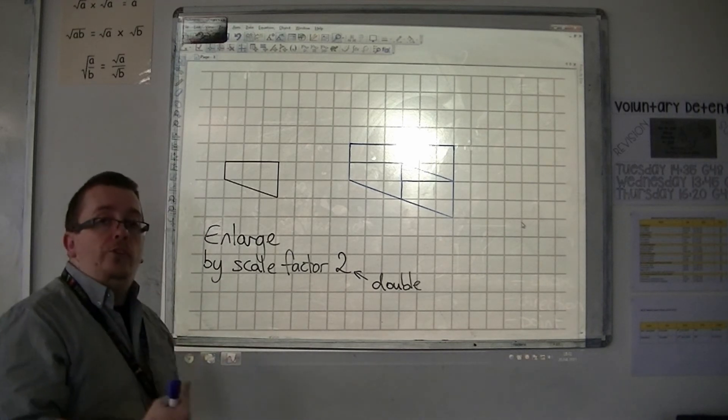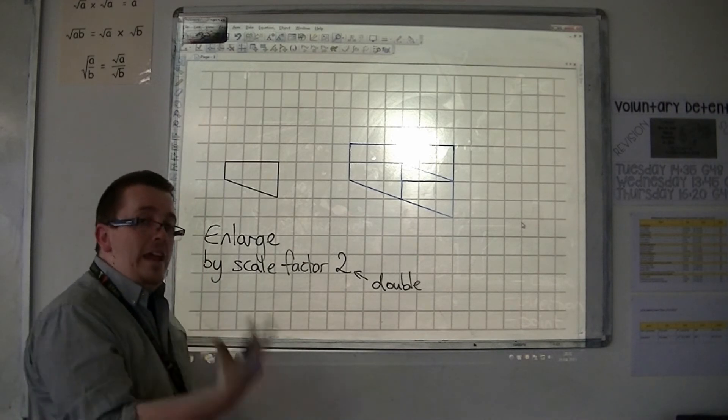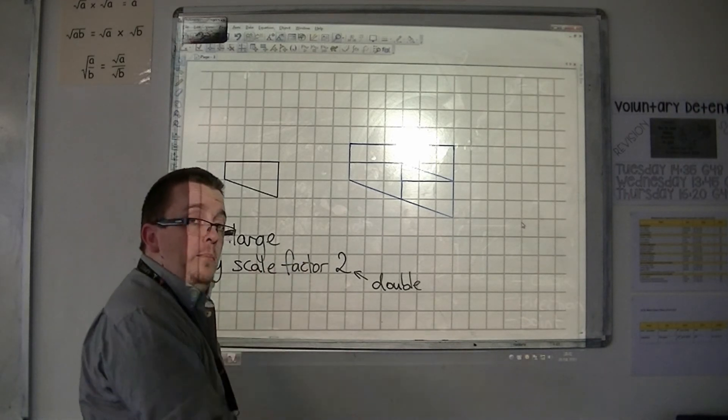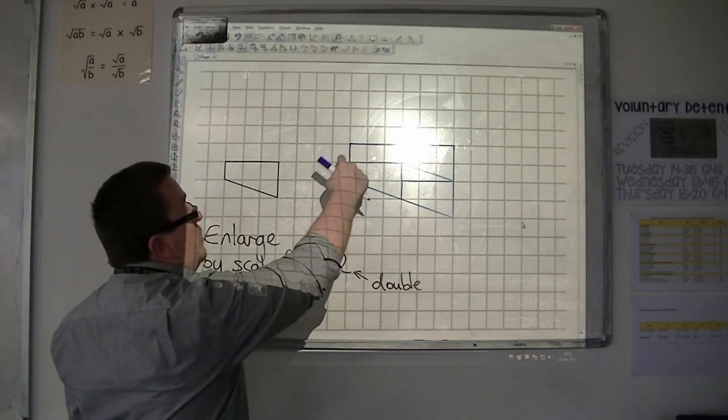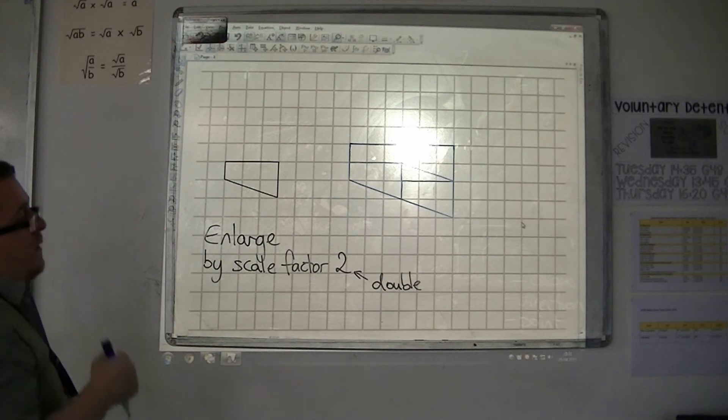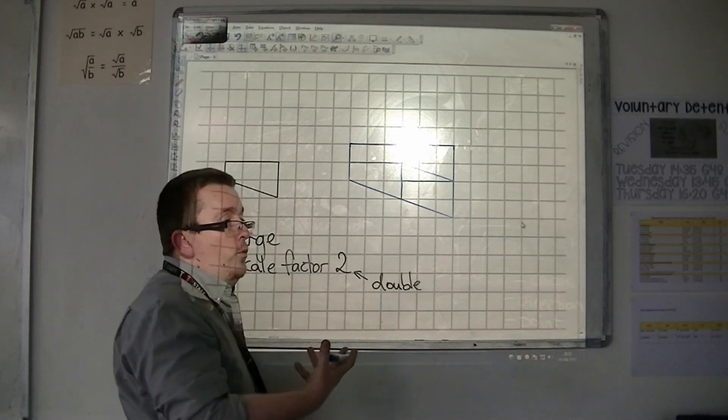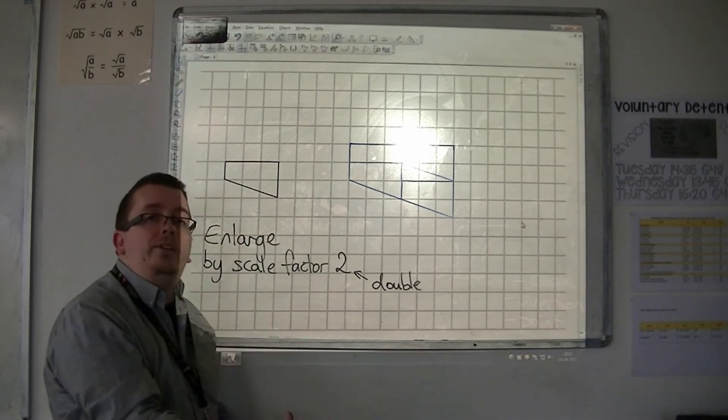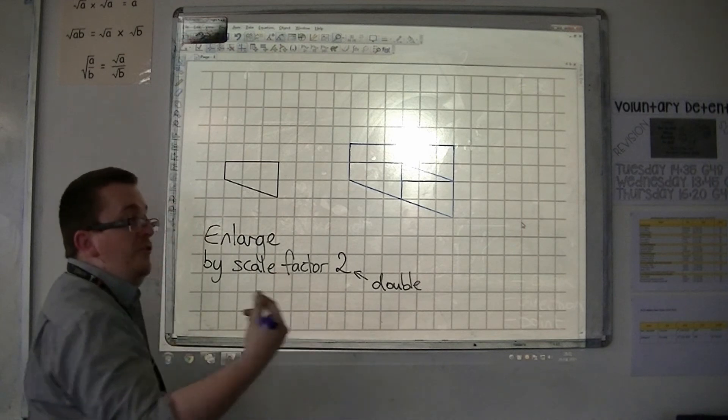And this has got to do with the fact that we're working with area. The lengths double, so the area is actually multiplied by 4. That's to do with the scale factor, and the fact that when we work with, like, meters squared, we square it. So, 2 squared would be 4.